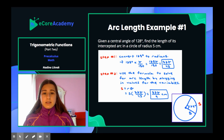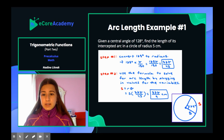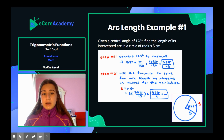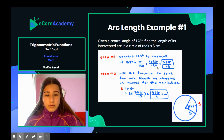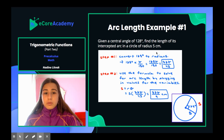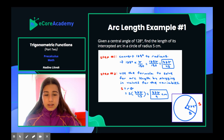Arc length example number one: given a central angle of 128 degrees, find the length of its intercepted arc in a circle of radius 5 centimeters. Step one — you have to convert the degrees to radians. So 128 degrees times pi over 180 gives you 128 pi over 180, which reduces to 32 pi over 45. Now we have theta in radians.